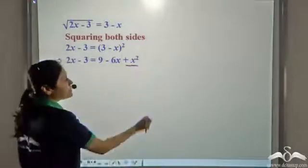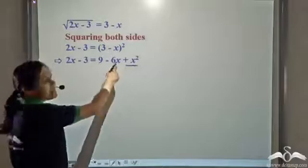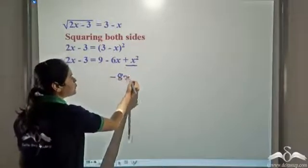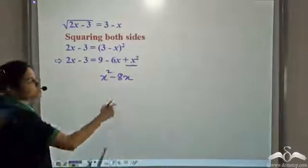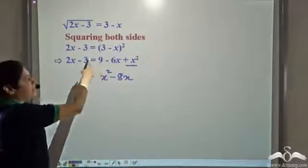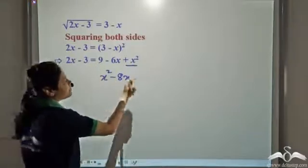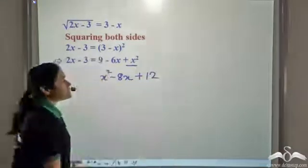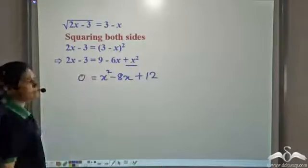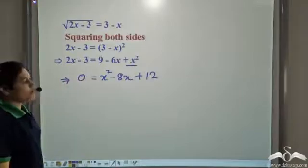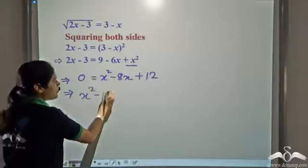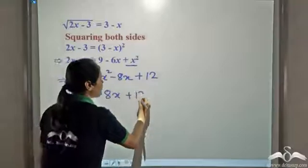Now we have an x squared term on the right hand side and negative 6x. We take this 2x to the right hand side, and it becomes negative 8x. So we have x squared, negative 6x minus 2x is negative 8x. If we take this negative 3 to the right hand side, it becomes plus 3, so 9 plus 3 gives us 12. Taking all terms to the right hand side, we get 0 on the left, or equivalently: x squared minus 8x plus 12 equals 0.